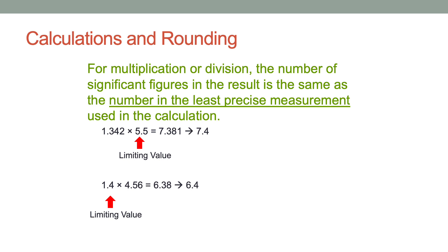Now that we know significant figures, let's do some calculations. For multiplication and division, the number of significant figures in the result is the same as the number in the least precise measurement. In other words, our answer should have the fewest number of significant figures — matching the least precise measurement.